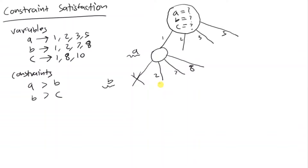What about 2? If we pick 2 for b, that's not less than a, which is 1. Neither are 7 or 8 — none of those are less than a. So we've hit a dead end. When you pick 1 for a, there's really no value you can pick for b without violating a constraint. So you backtrack to your initial state and try 2 for a instead.